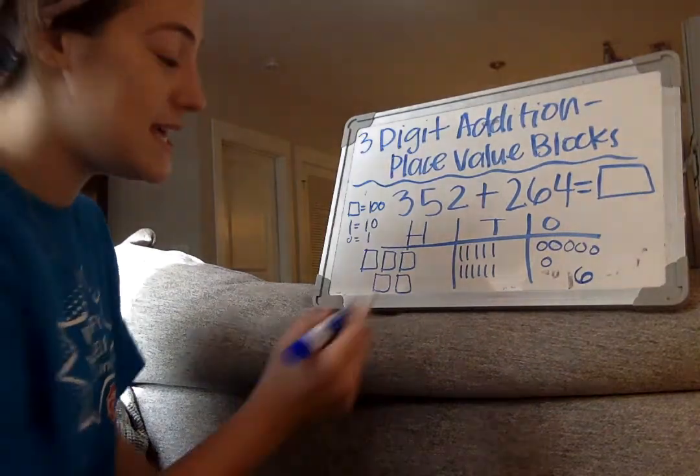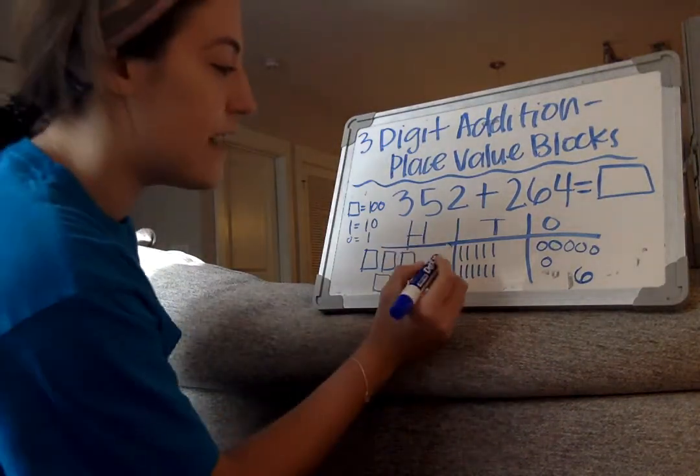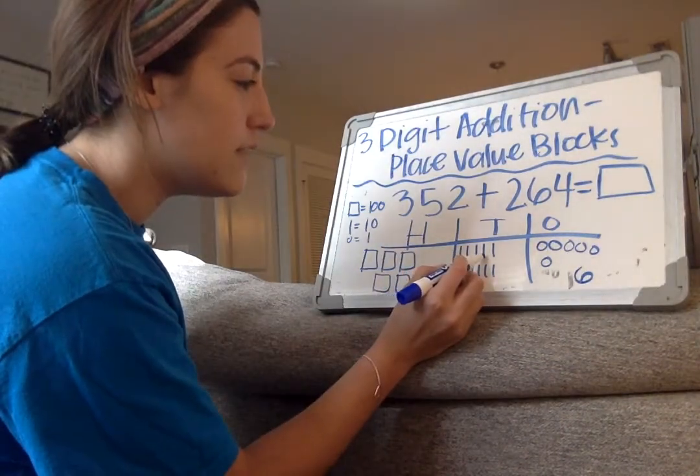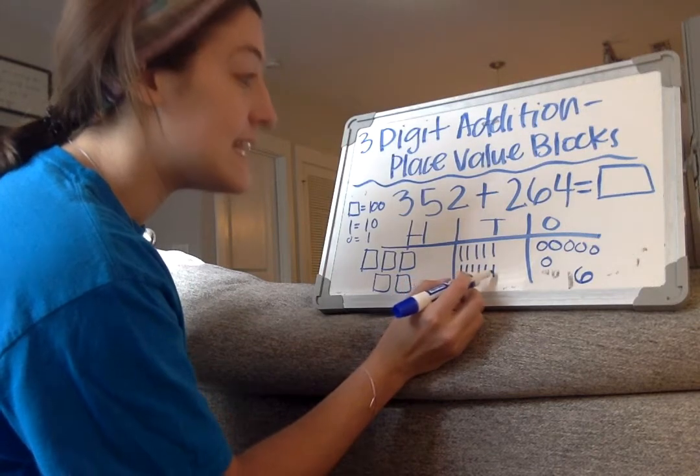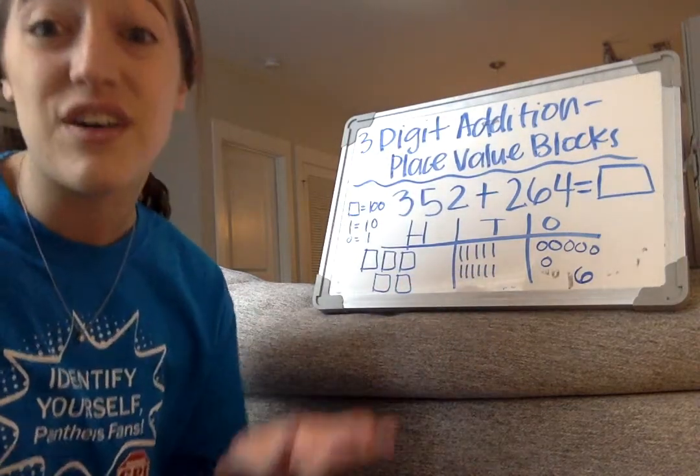Then I move over to my tens place. Let's count how many tens we have. One, two, three, four, five, six, seven, eight, nine, ten, eleven. So I see that I have eleven tens. I know that when I have not more than nine, ten or more, I have to do what we call bundle up or regroup.